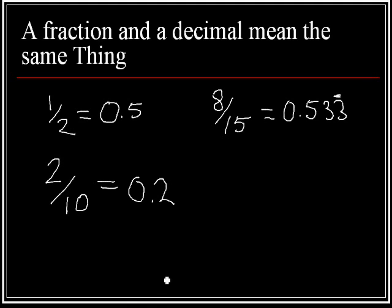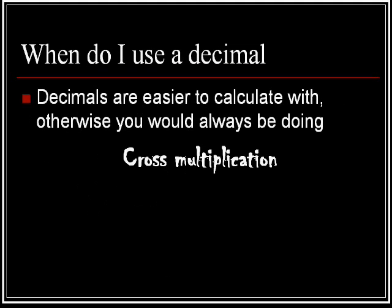When do I use a decimal? Well, decimals are easier to calculate with. If I wanted to find out what ten percent, a ten percent discount was, or if I wanted to find out if I got a ten percent raise, or if I wanted to find out what fifty percent of my monthly income is, we'd use decimals for that. Otherwise, the only way to do it would be cross multiplication. And I know none of you particularly enjoy doing that. However, we're going to be doing some more of it, but this is one of the ways that you can avoid doing a lot of cross multiplication.